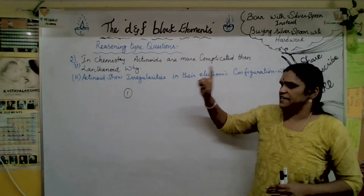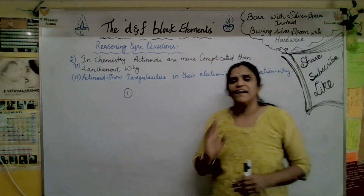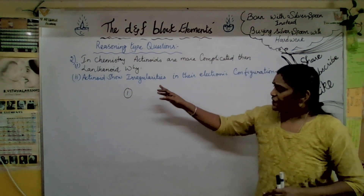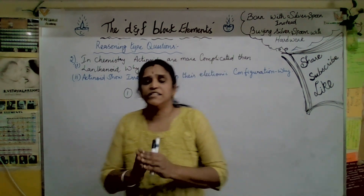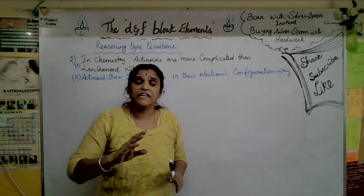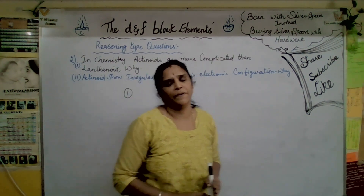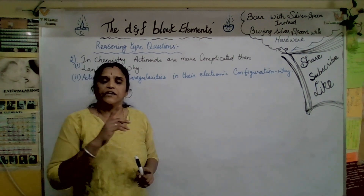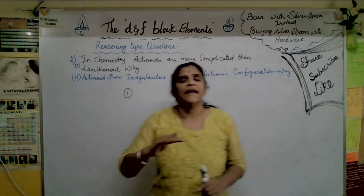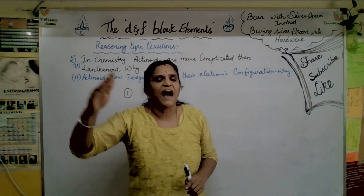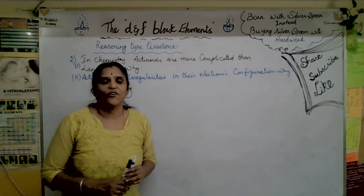The next important question: actinoids are more complicated than lanthanoids in chemistry, and actinoids show irregularities in their electronic configuration. Actinoids have more radioactive elements and very short half-life periods. Regarding irregularities, the actinoid series has comparable energy of 7S, 6D, and 5F orbitals, which naturally leads to irregularities in their electronic configuration.